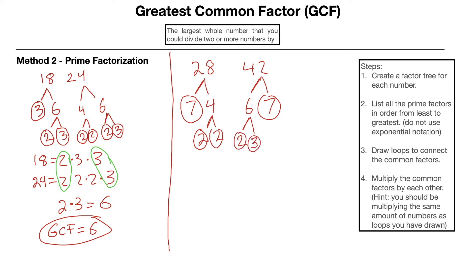Step number 2. List the prime factors in order from least to greatest. 28 equals 2 times 2 times 2 times 7. 42 equals 2 times 3 times 7. Again we're going to look for what do the two lists have in common. They both have one 2. They both have one 7.